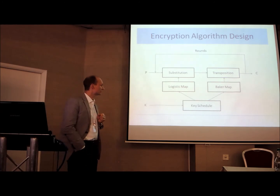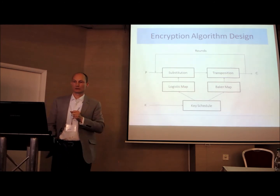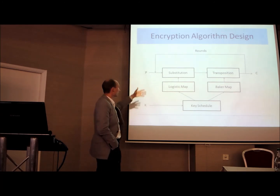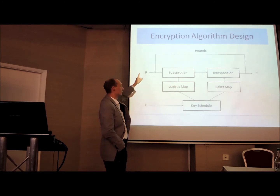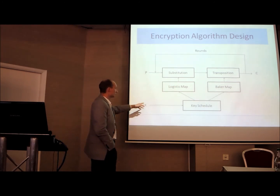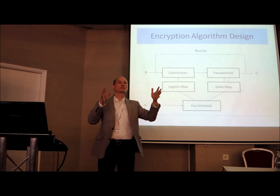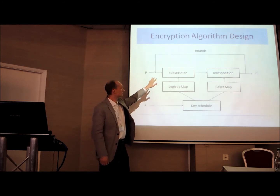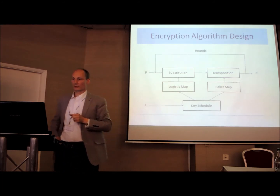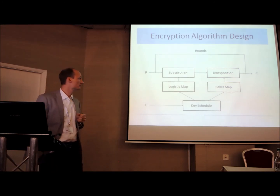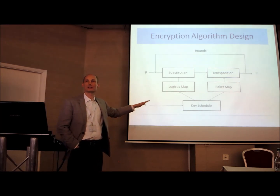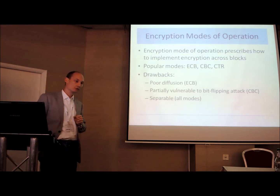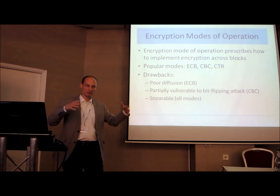This is basically the generic architecture of the algorithm, where we proceed in a certain number of rounds. The input plain image would experience a substitution followed by a transposition, going back to the beginning a certain number of times. The key itself follows a certain key schedule — per round we take certain bits of the key and feed these into suitable initial values for the logistic map, leading to the specific substitution cipher, and similarly for the Baker map. This is the generic design; I'm omitting the details on the exact key schedule as that is fairly technical.